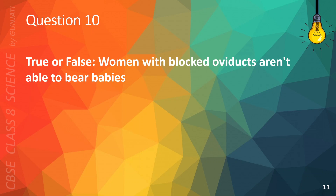Question 10. True or false: Women with blocked oviducts are unable to bear babies. The correct answer is A. True.